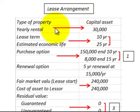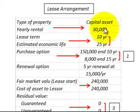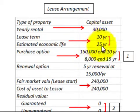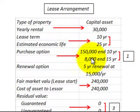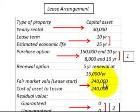Here are the items we'll be using for this example. We have a yearly rental rate of $30,000 per year, and the lease term is 10 years. The estimated economic life of the leased asset is 25 years. There is a purchase option: at the end of 10 years, the lessee can purchase it for $150,000, and at the end of 15 years, the lessee can purchase the asset for $8,000. The fair market value at the start of the lease is $240,000.